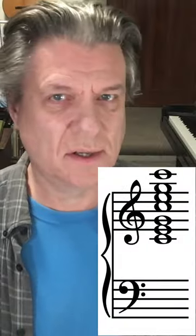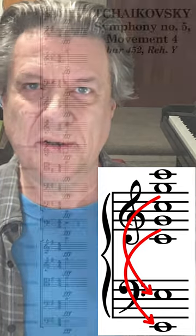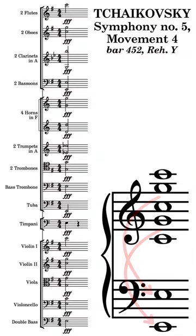Tutti chords aren't always in a solid root position. Sometimes the overall voicing is inverted. Tchaikovsky scores this triple forte 6-3 C major chord in the fourth movement of his fifth symphony, with the major third of E as the lowest note.